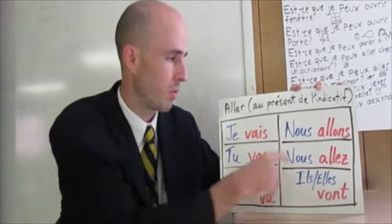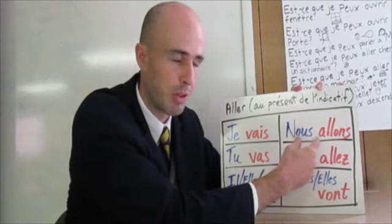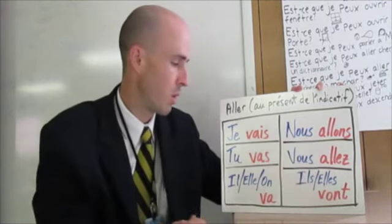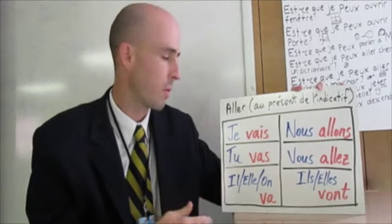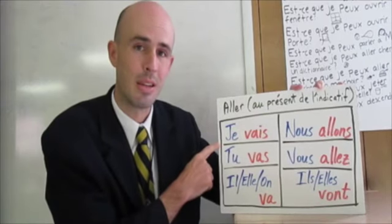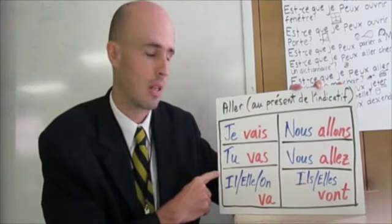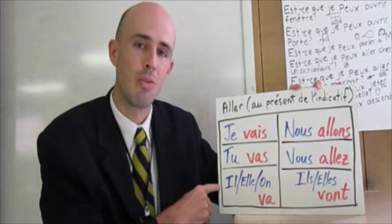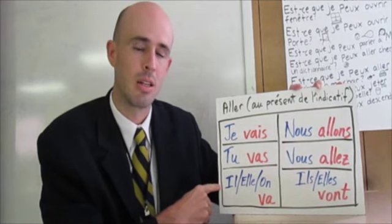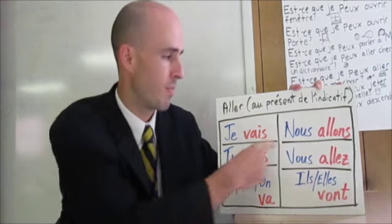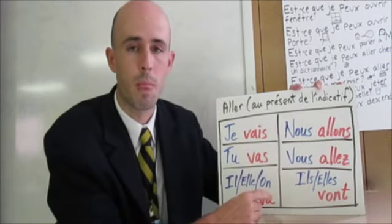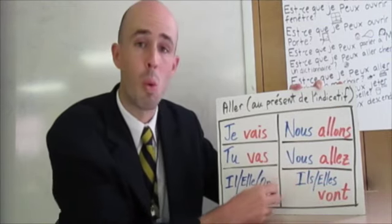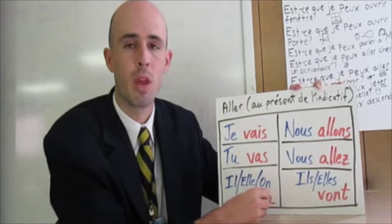Remember, don't forget to pronounce those liaisons — the nous form and the vous form. One more time: je vais, tu vas, il va, elle va, on va, nous allons, vous allez, ils vont, elles vont.